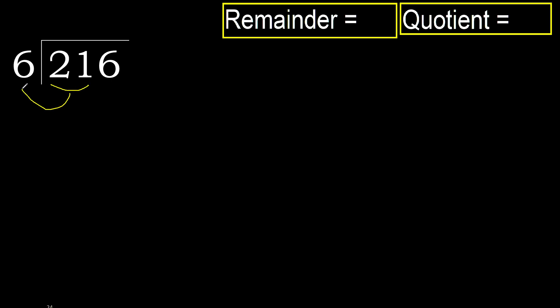21 is not less than 6, so we work with 21. 6 multiplied by which number is nearest to 21 but not greater? 6 multiplied by 4 is 24 — 24 is greater, so that's too big. 6 multiplied by 3 is 18 — 18 is not greater, so we use 3. Subtract.